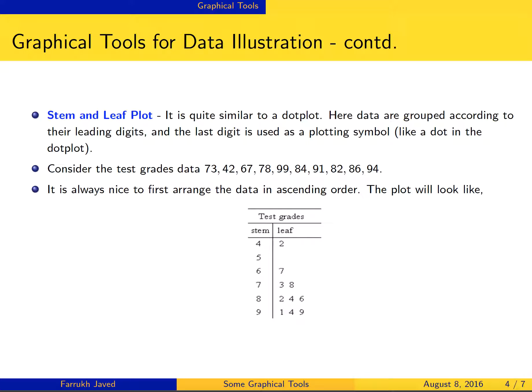For instance, if you have data like 73, 42, 67, 78, 99, 84, 91, 82, 86, 94, the leading digits are 4, 5, 6, 7, 8, 9. I put them in ascending order. Then in the leaves, you start connecting. Because one observation was 42, the 2 comes with 4. I put 5 here because I wanted a sequence, but I noticed there's nothing in the fifties in this data.